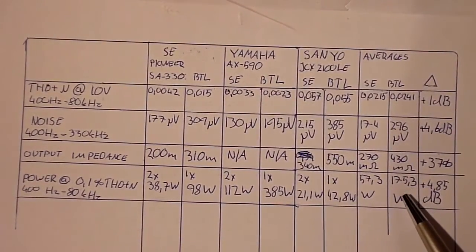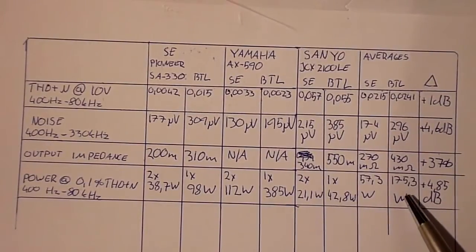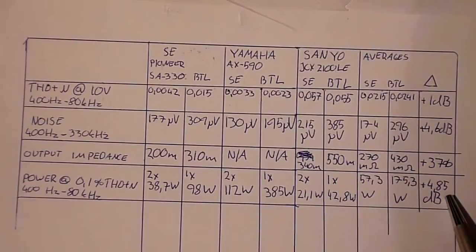Average power output was 57.3 watts for the single-ended units, and 175.3 watts for the bridge-tied load tests. And that's a 4.85 dB increase in power.